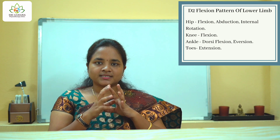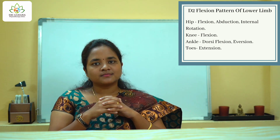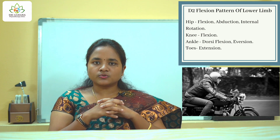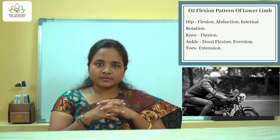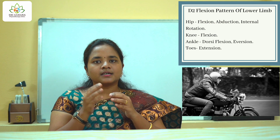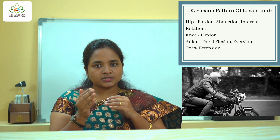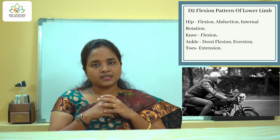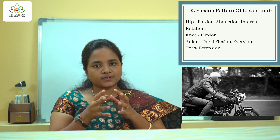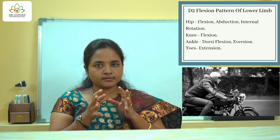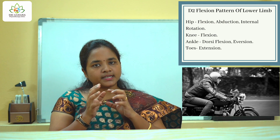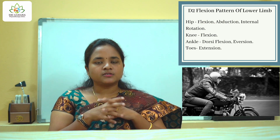Talking about D2 flexion, I'm going to give you an example of riding your bike. When you ride your bike, your lower extremity will follow the D2 flexion pattern — that is, at your hips it will be hip flexion, abduction, and internal rotation; at your knee joint it will be knee flexion; and at your ankle joint it will be dorsiflexion and eversion; and at your toes it will be extension.